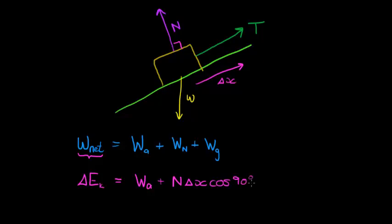Cos of 90 degrees is zero. So the normal force is not doing any work, because it's not at all in the direction — or in the opposite direction — of the displacement. Finally, from the previous video, we learned that the work done by the gravitational force is equal to the change in potential energy, but that is when it's heading down.